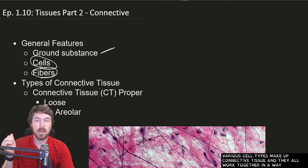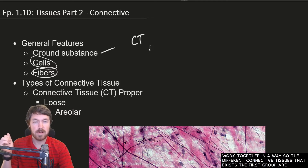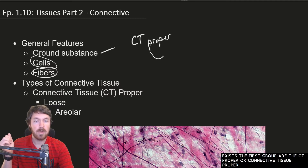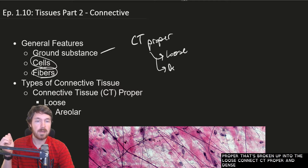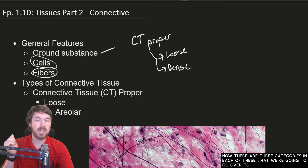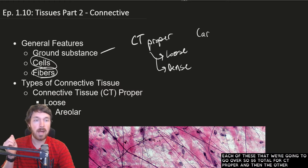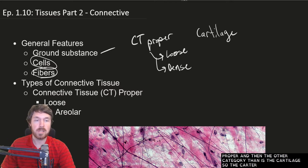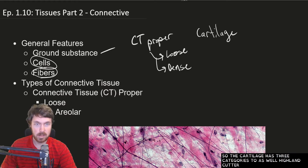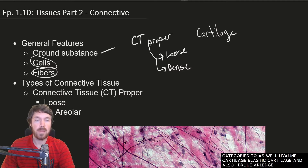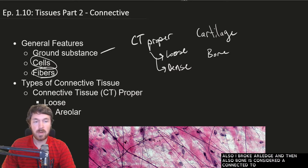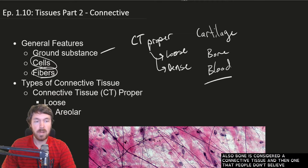The different connective tissues that exist — the first group is CT proper, or connective tissue proper. That's broken up into loose connective tissue proper and dense connective tissue proper, with three categories in each, so six total. The other category is cartilage, which has three types: hyaline cartilage, elastic cartilage, and fibrocartilage. Bone is also considered a connective tissue, and blood is as well — we'll talk about that briefly.